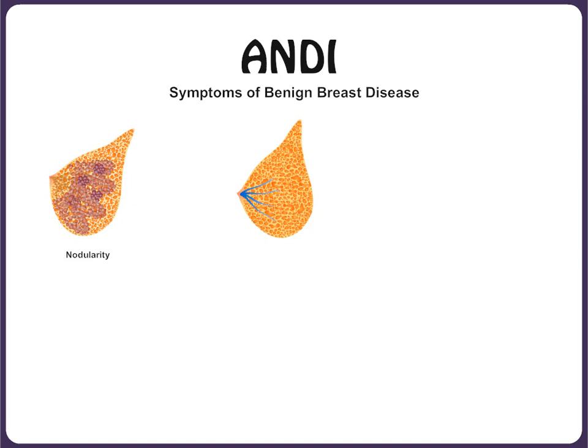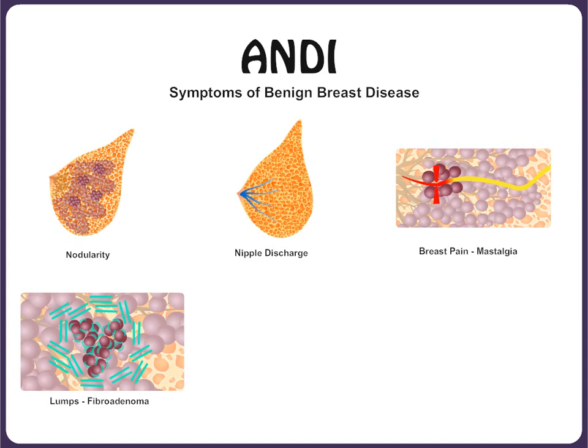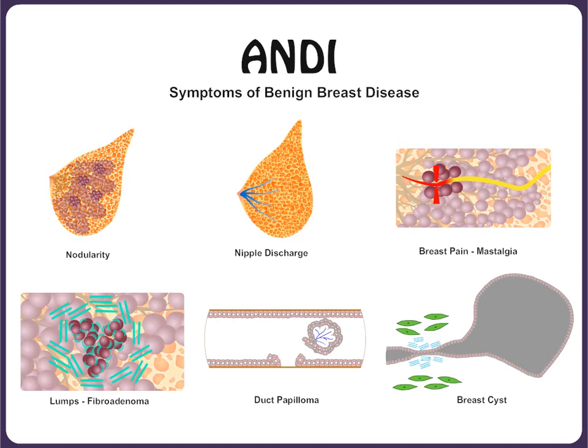It is thought that nodularity of the breast, nipple discharge, mastalgia, small lumps in the breast like fibroadenoma, duct papilloma, and breast cysts can all be explained with this pathophysiological concept of ANDI.